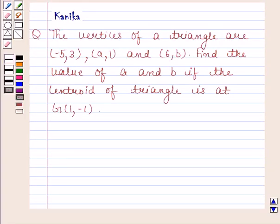Hi and welcome to our session. Let us discuss the following question. The vertices of a triangle are (-5,3), (a,1), and (6,b). Find the value of a and b if the centroid of the triangle is at G(1,-1).